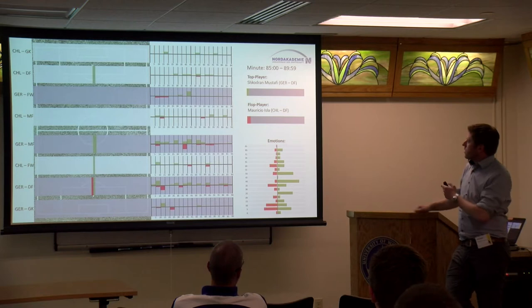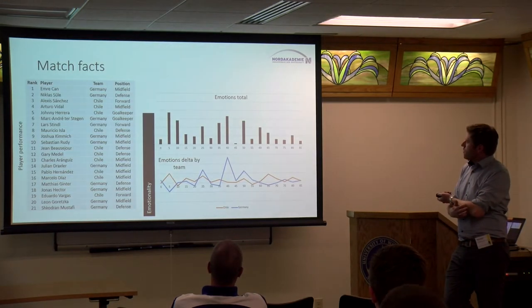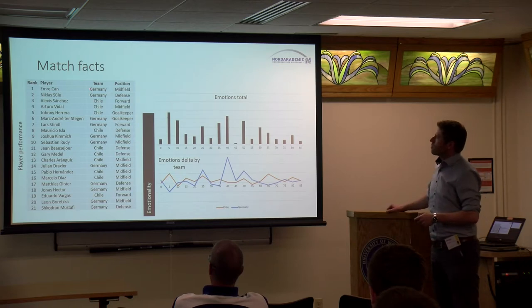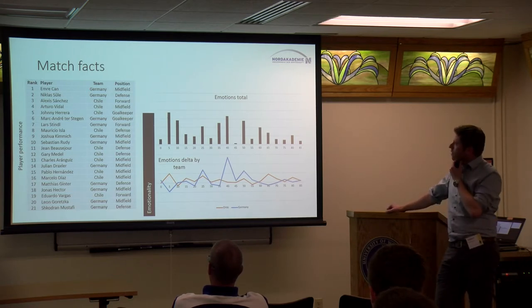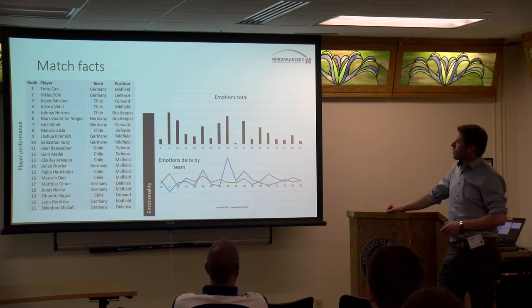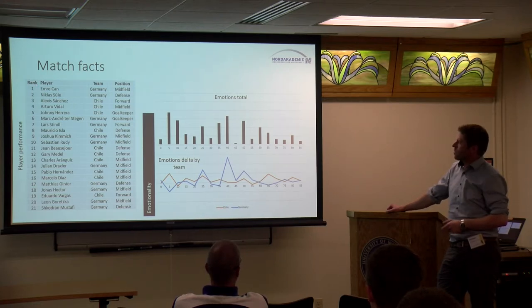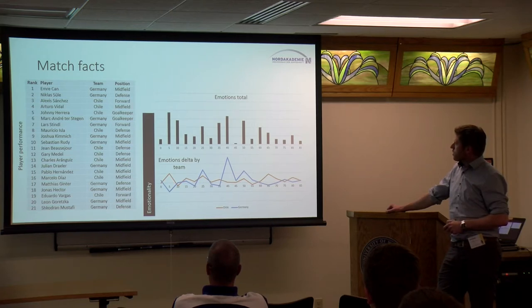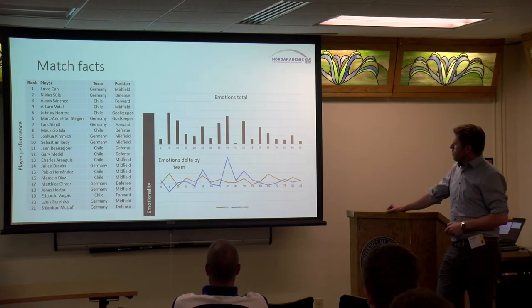At the end of the match, we can look at an aggregate view. On the left side, you can see player performance: best player was Andrew Chan, second was Niklas Süle, third was Alexis Sanchez. The official FIFA player of the match was Alexis Sanchez, so you can see a slight bias from German commentators placing German players at the front, but Sanchez is still not far away at position three. We have the total emotionality of the game — not that high for this match — and the emotion totals by five-minute blocks, comparing Chile in orange and Germany in blue over time.